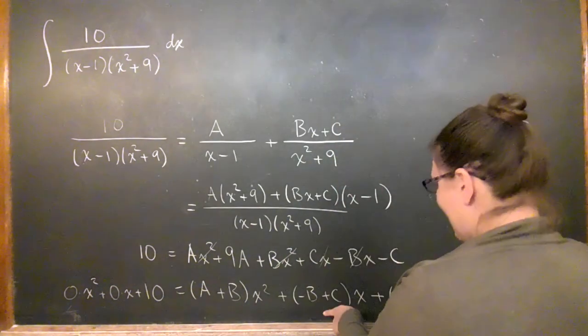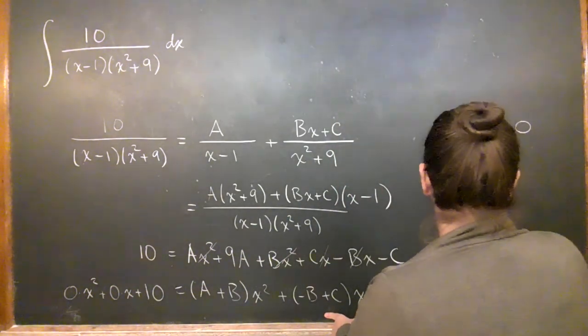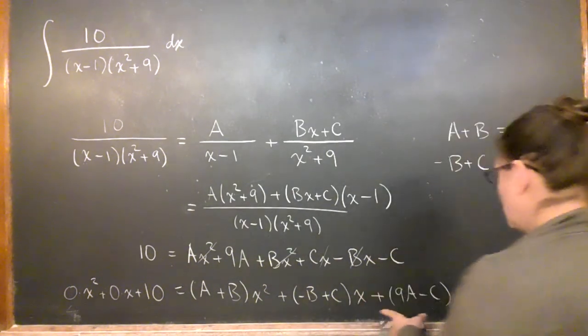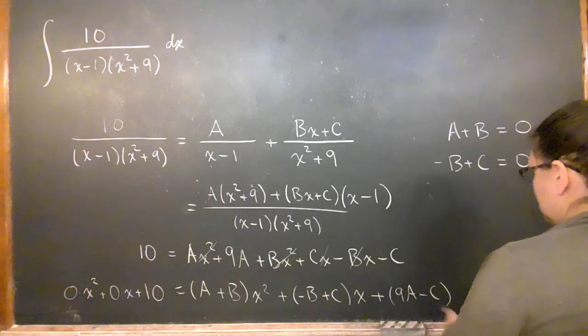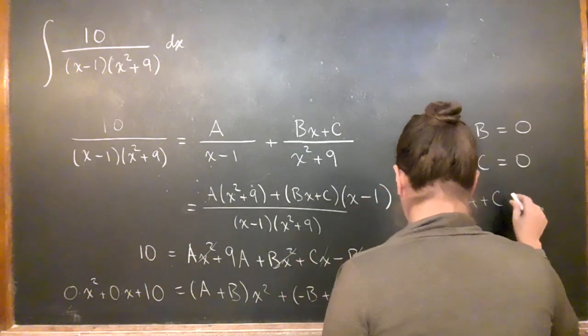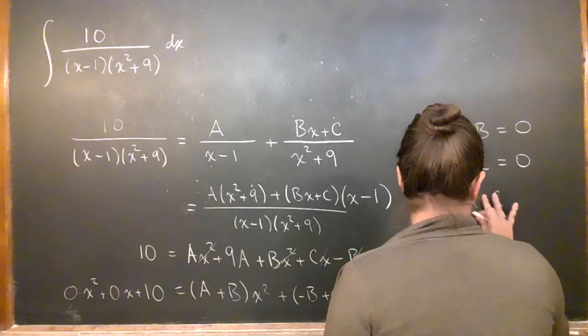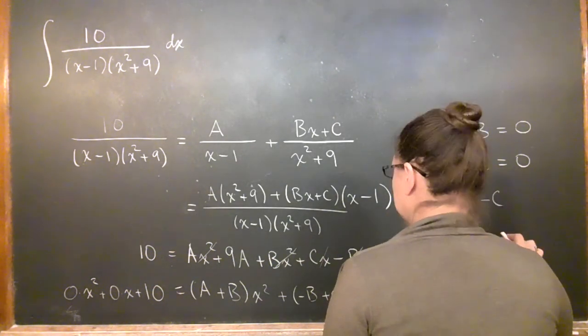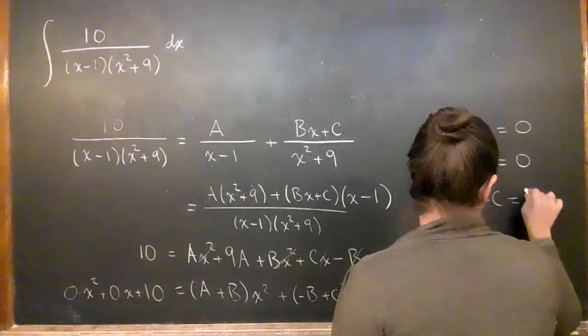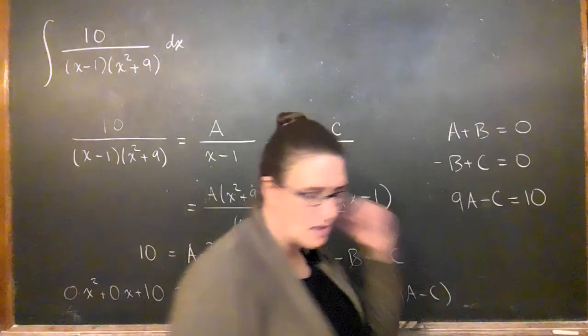What is in front of the x also has to be 0. And what's in front of this is just the constant. There's only the constant left. So 9a plus c minus c equals 10.